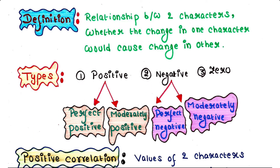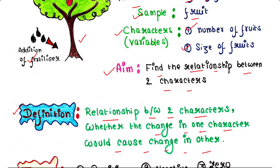Our aim of the experiment is to find whether any kind of relationship exists between these two characters. Correlation is the relationship between two characters which reveals whether the change in one character would cause change in the other or not. That means if number of fruits is changed after applying fertilizer, we can check whether it has any effect on the size of fruits, or vice versa.